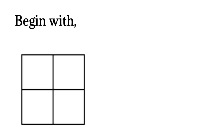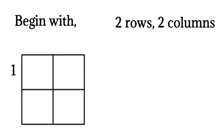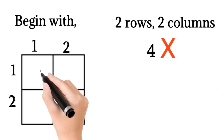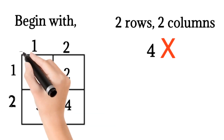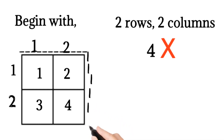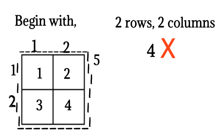Let me begin with this figure, which has 2 rows and 2 columns. This is the first row, second row, first column, second column. So tell me how many squares are there here? If you say 4, then it is a wrong answer. Let me count manually. This is the first square, second square, third square, fourth square, and the bigger border square — that is the fifth square. So the total squares here is 5.